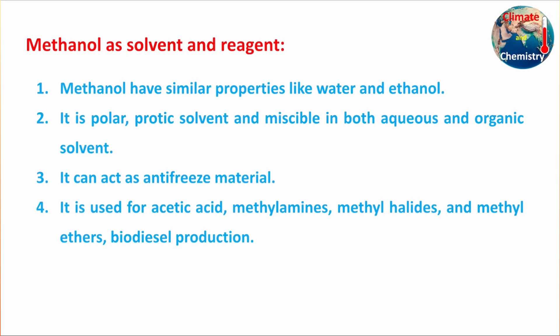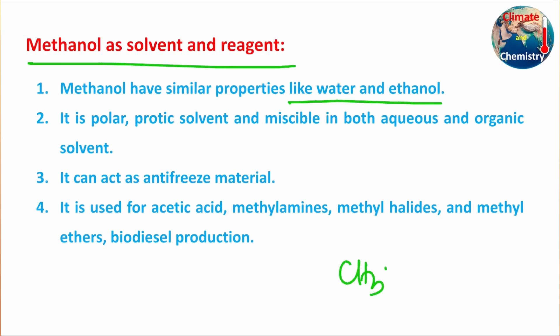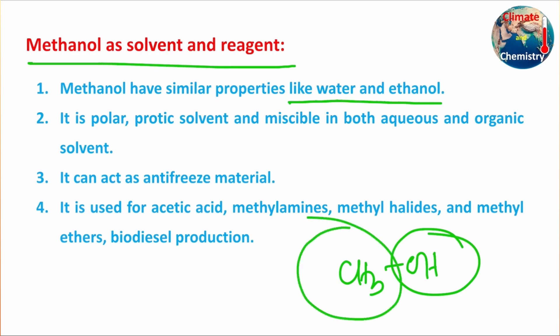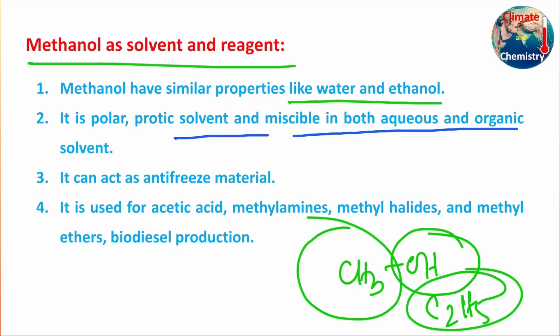Methanol is a solvent and reagent because of its multiple properties. Its structure is CH3OH — the OH group has similar properties to water, while the methyl group has similar properties to ethanol's ethyl group (C2H5). It is a polar protic solvent, miscible in both aqueous and organic solvents, and can act as an antifreeze material, similar to the well-known antifreeze ethylene glycol.